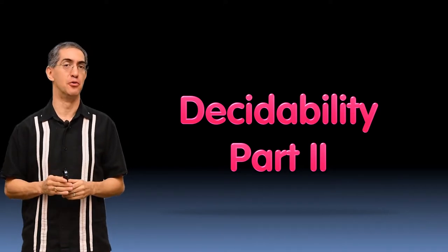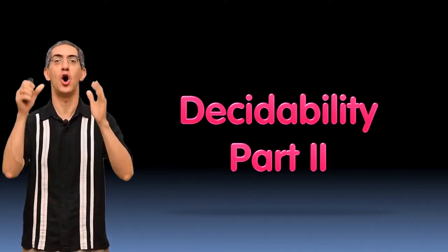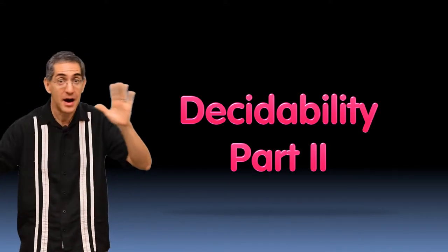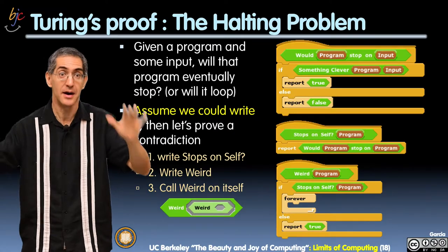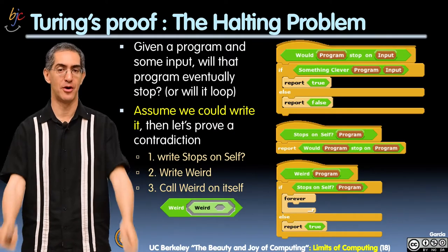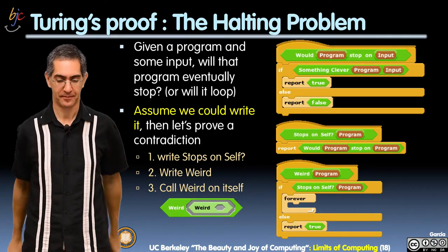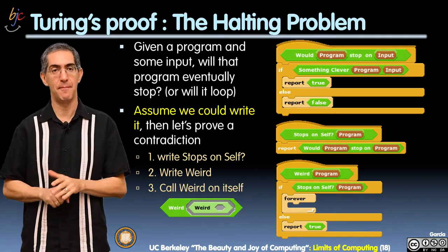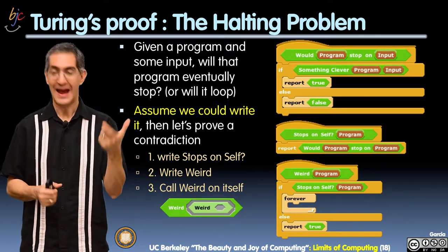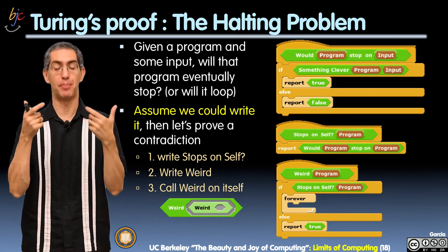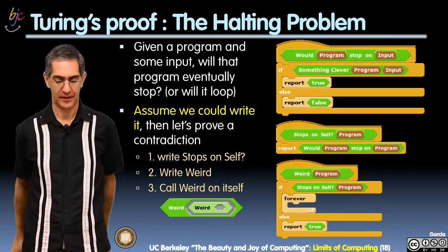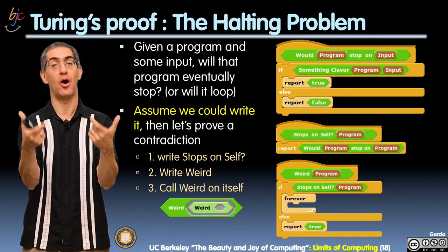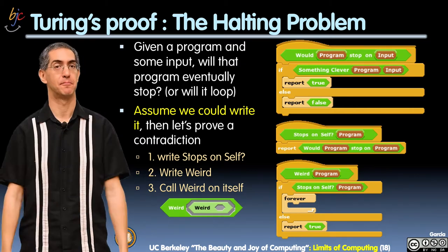So here's Alan Turing's proof. It's called the halting problem. This is important. Given a program and some input, will that program eventually stop on that input?